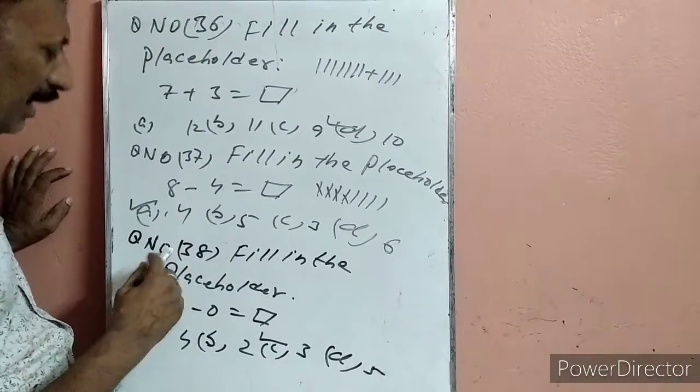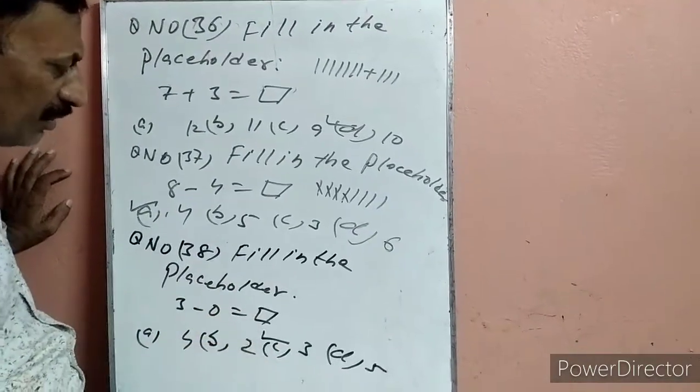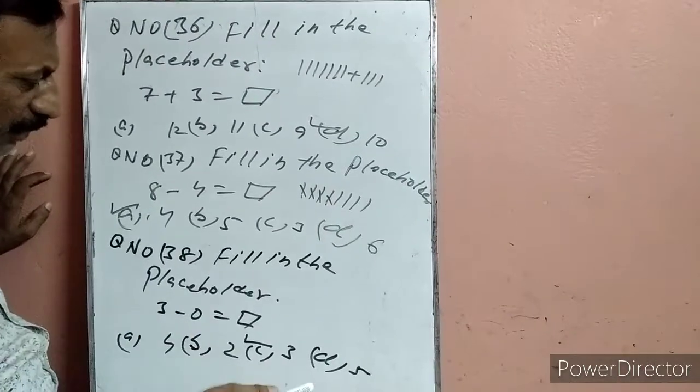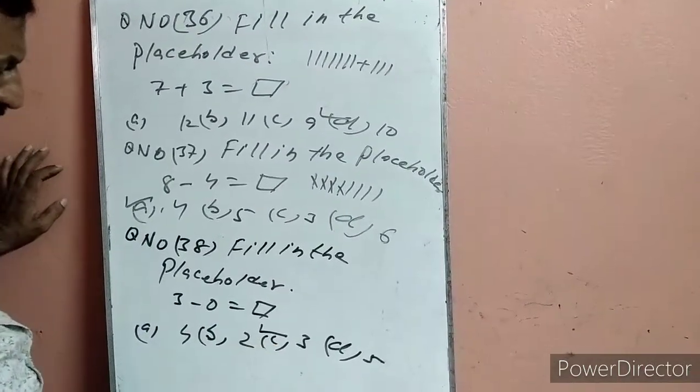Question 38: Fill in the placeholder — 3 minus 0. इसका answer 3 ही होगा. 3 पर टिक लगा दिया.